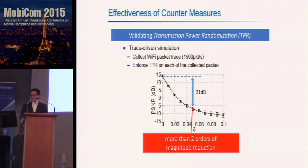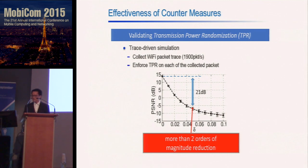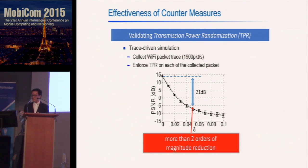We also verified our transmission power randomization scheme using trace-driven simulation. We collected Wi-Fi packet traces using the WARP board, then enforced transmission power randomization on each collected packet, randomizing power following a normal distribution. A 5% random variation of the power can reduce the audio PSNR by more than two orders of magnitude, which is sufficient to defeat this kind of emissive ART attack. Moreover, 5% random variation is small enough not to affect the normal wireless MAC-layer and network-layer protocols.